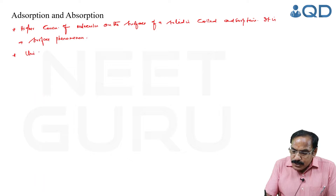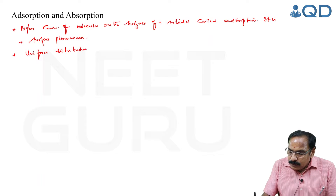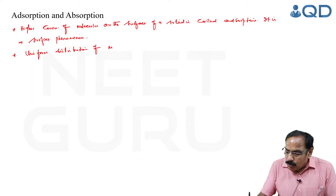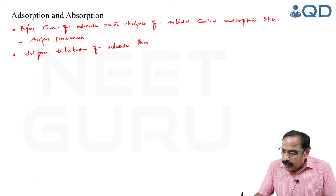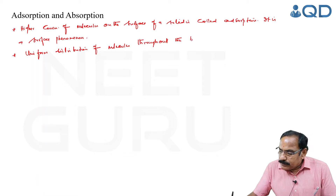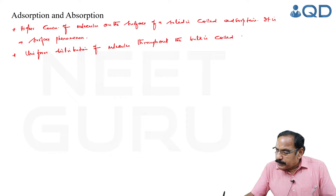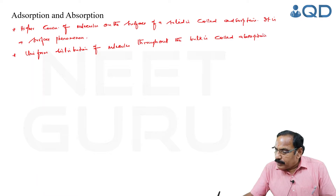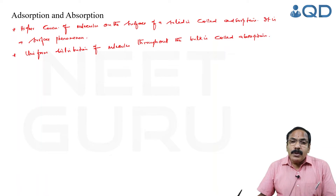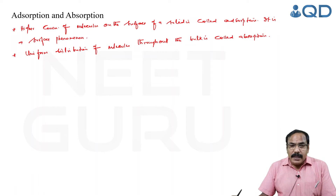Uniform distribution of molecules throughout the bulk is called absorption. So when we use a mask, we are actually adsorbing the gases — the protection from a mask is to prevent the entry of dust particles and other pollutants.